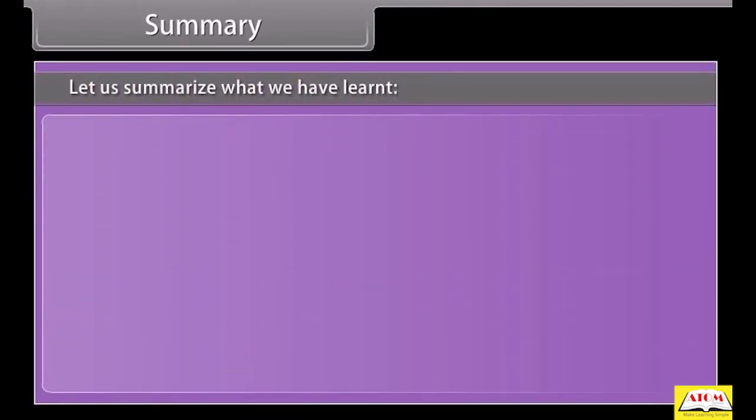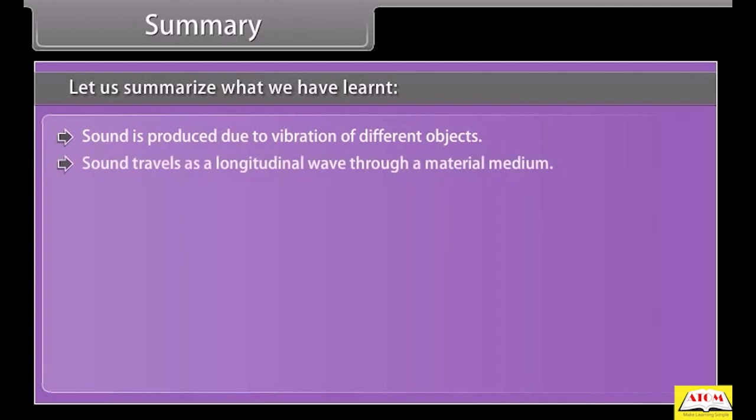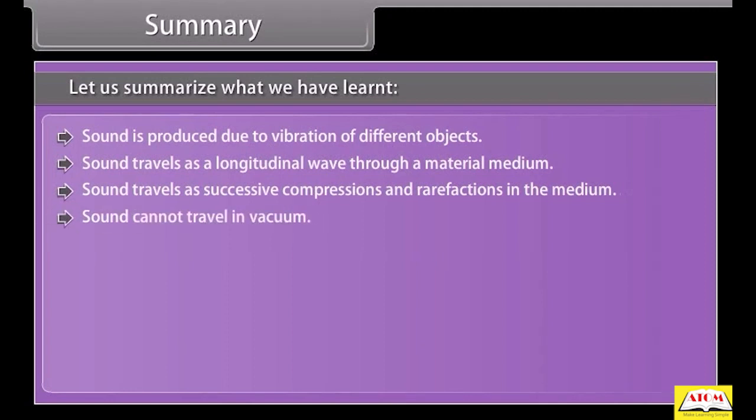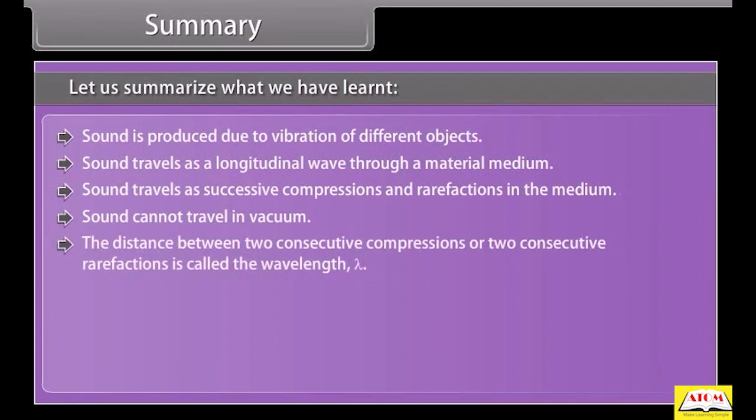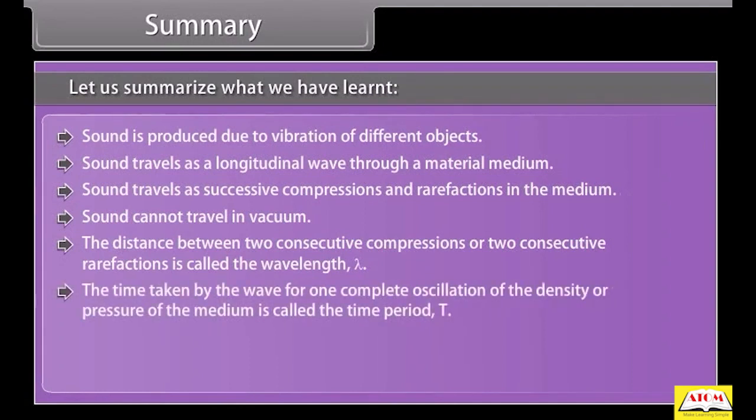Summary. Let us summarise what we have learnt. Sound is produced due to vibration of different objects. Sound travels as a longitudinal wave through a material medium. Sound travels as successive compressions and rarefactions in the medium. Sound cannot travel in vacuum. The distance between two consecutive compressions or two consecutive rarefactions is called wavelength lambda.